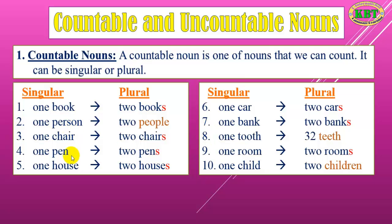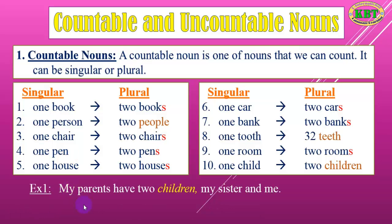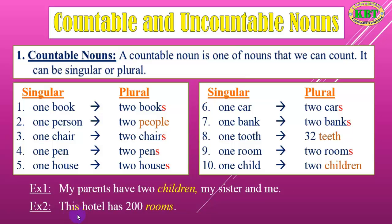All of these nouns are countable nouns. Let's look at some example sentences. My parents have two children — my sister and me. So 'children' is a countable noun. One more example: this hotel has 200 rooms. 'Rooms' is a countable noun and it is plural.